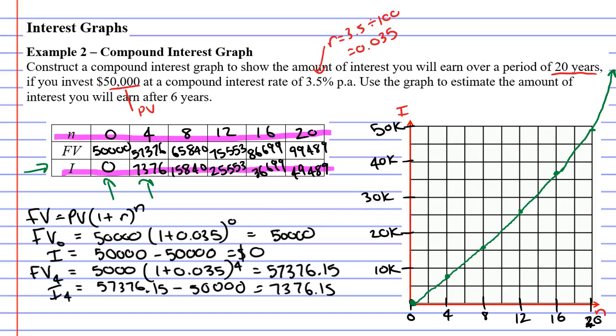There is another part of the question we haven't solved yet. It wants you to estimate the amount of interest you'll earn after six years. Notice it says estimate, which means it doesn't have to be a perfect solution, and we're going to do it using the graph. Six is about here, halfway between the four and the eight. If we go up and meet at the graph, and then across to the left, you'll see we're slightly above 10k, maybe 12k. It's just an estimate. So after six years, you'll get approximately 12k in interest.